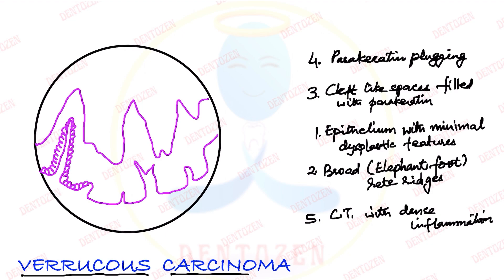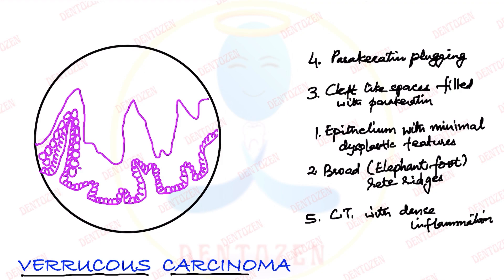The basal cell layer is made up of cuboidal or low columnar cells. Above that we'll draw normal epithelium with minimal dysplastic features, showing the normal layers. Here you can see that the basement membrane remains intact. In this epithelium we are showing that it is growing outwards as well as downwards.